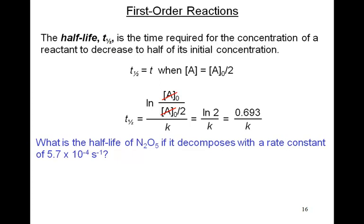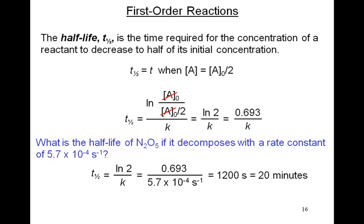What's the half-life of N₂O₅ if it decomposes with a rate constant of 5.7 times 10⁻⁴ seconds to the negative 1? T½ equals 0.693 divided by K, which comes out to 1,200 seconds — or 20 minutes. That would be the half-life of this particular reaction: it takes 20 minutes for half of the concentration to disappear.